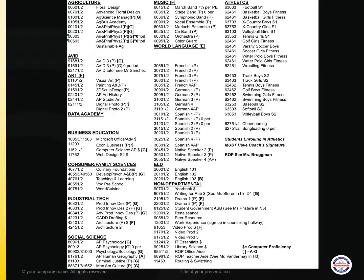The second column is Music, starting with Marching Band (7th period), Stage Band (zero period), Symphonic Band, Vocal Ensemble, Mariachi Ensemble, Concert Band, Orchestra, and Color Guard. Under World Languages, you can see French 1 through 4 AP, German 1 through 4 AP, Spanish 1 through 4 AP, and Spanish for Native Speaker through 4 AP.